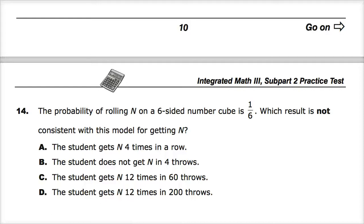Welcome to this Integrated Math 3 practice test for 10Ready. Question number 14. The probability of rolling N on a six-sided number cube is one out of six. Which result is not consistent with the model for getting N?